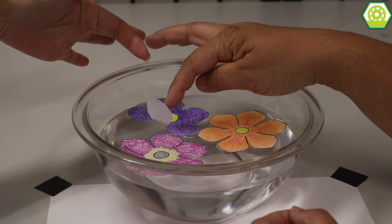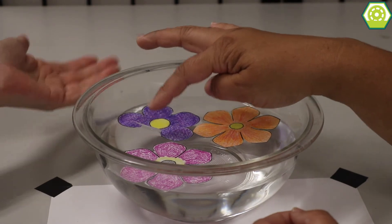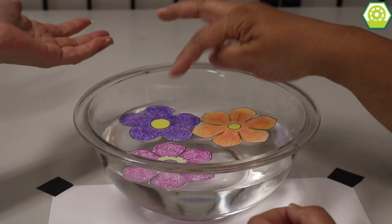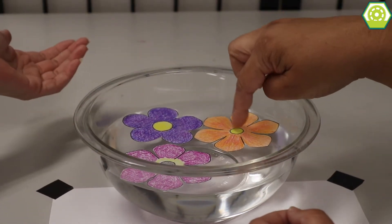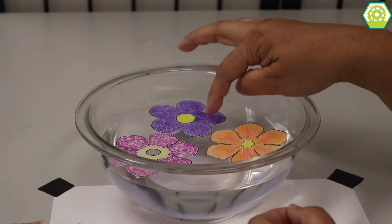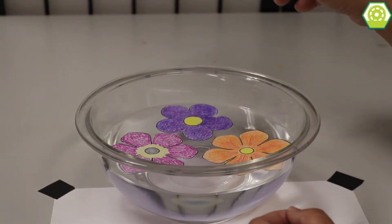Right, crayons has what? Wax, wax, right. So wax will not soak up water. So once it's all open, you take it out, let it dry on a piece of paper, and you can start all over again.